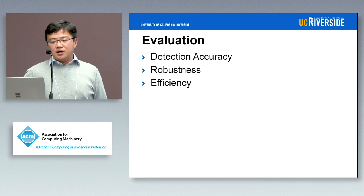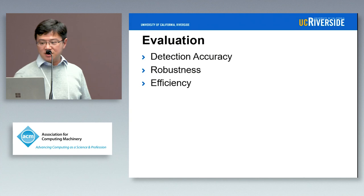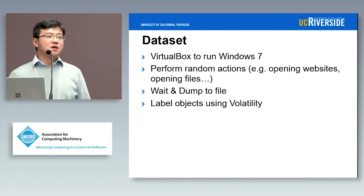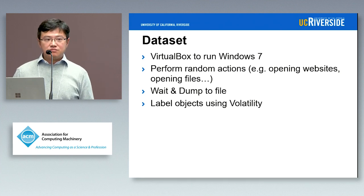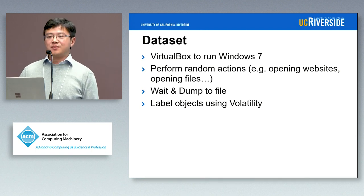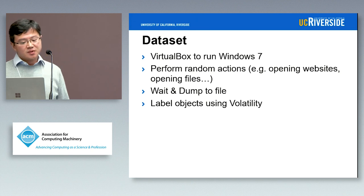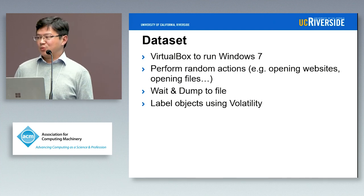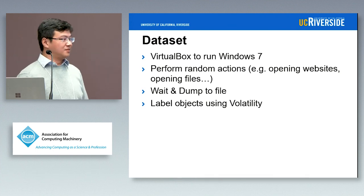Let's look at our results. We evaluate our system with respect to detection accuracy, robustness, and efficiency. We prepared our dataset using VirtualBox, running Windows 7 and performing lots of random actions to stimulate the OS and allocate random objects at random locations, then choosing a random interval to dump the memory. We labeled objects using Volatility. We used Windows 7 because Volatility does not work very well for Windows 10.